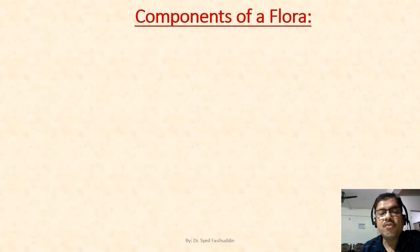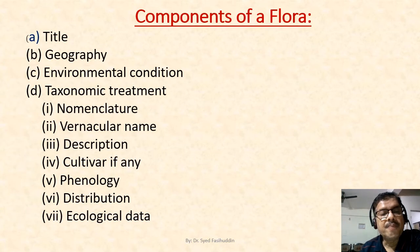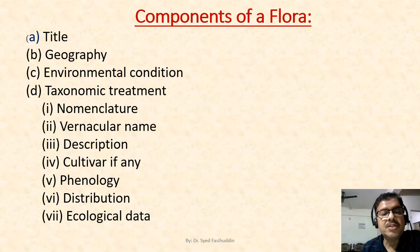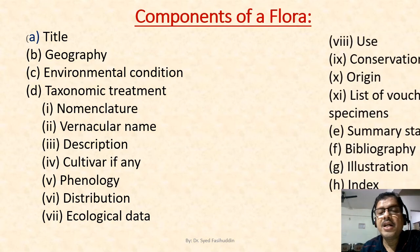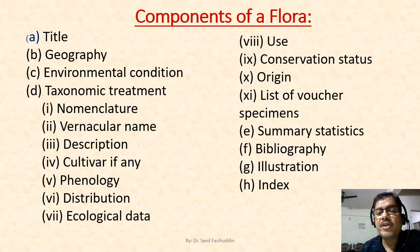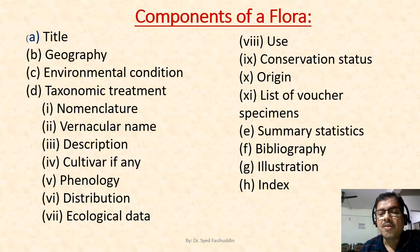The components of a flora include: title, geography, environmental conditions, and taxonomic treatment — which covers nomenclature, vernacular name, description, cultivar if any, phenology, distribution, ecological data, uses, conservation status, origin, list of exsiccatae (specimens preserved as verifiable permanent records), summary statistics, bibliographic information, illustrations, and lastly an index.